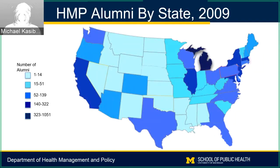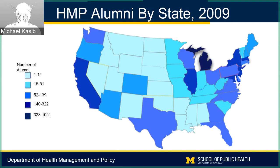This is a map of how the alumni network is spread out across the country. It's an older map, so there are even more alumni now, but they are mainly in the Midwest, in California, and all over the US.